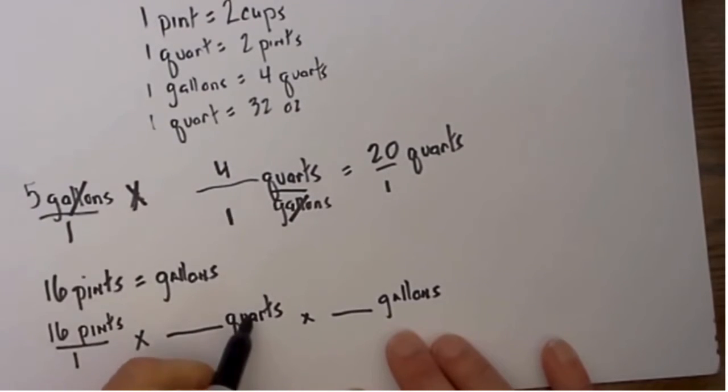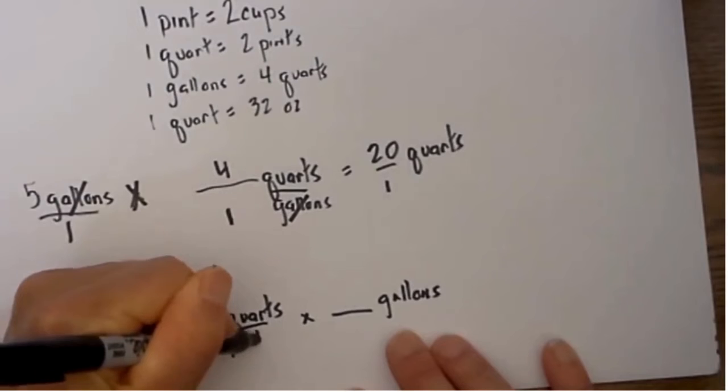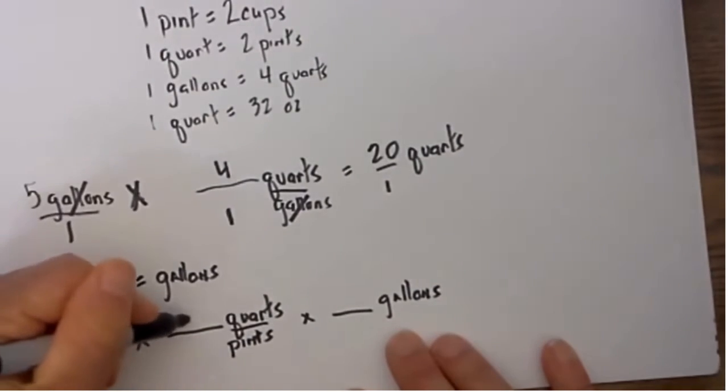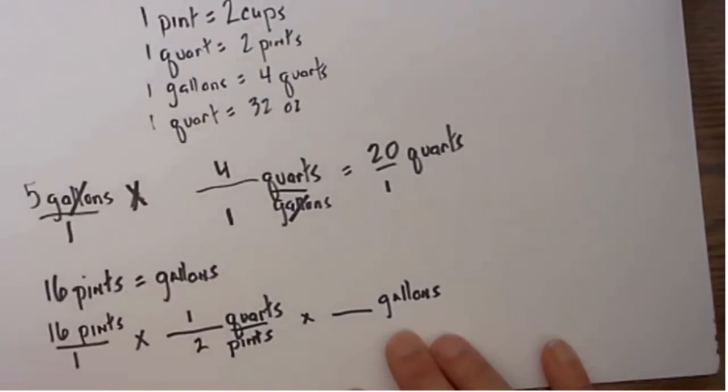I put quarts on top because I want to convert to that first. I will put pints on the bottom. Which is larger, quarts or pints? Well, I know that 1 quart is 2 pints, so quarts are larger. If I have 1 quart, I have 2 pints.